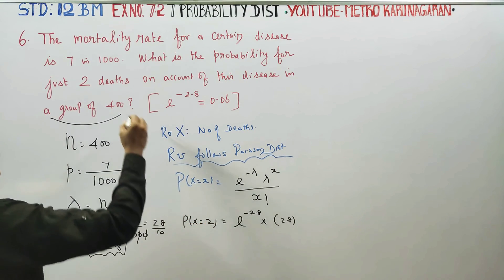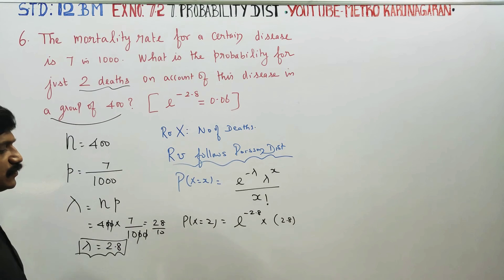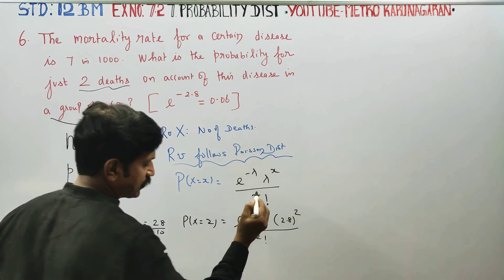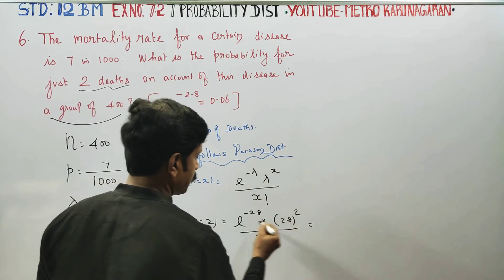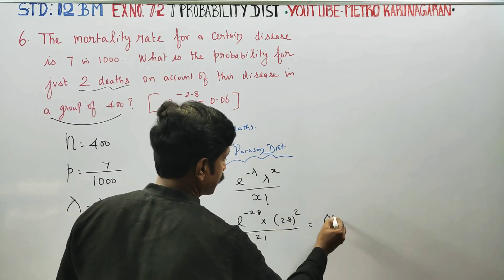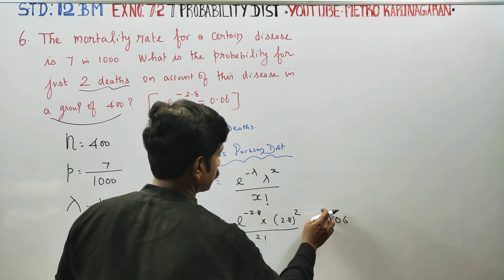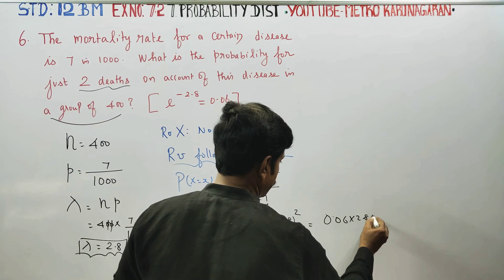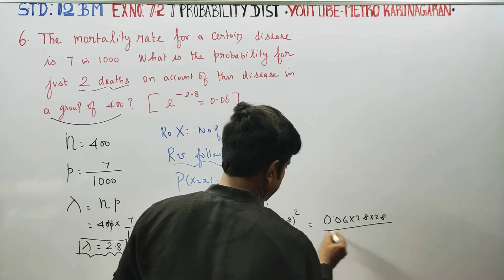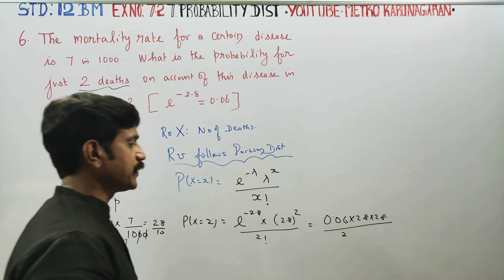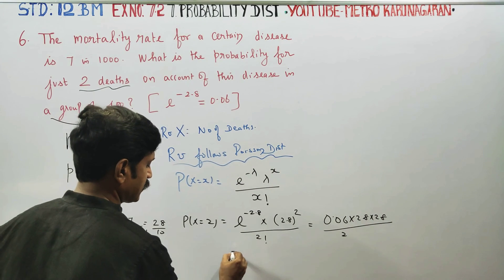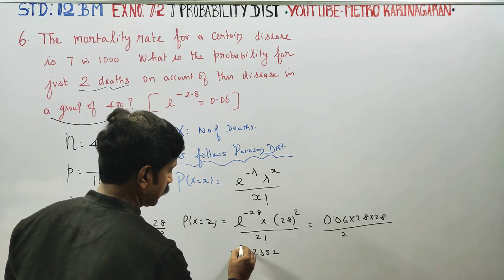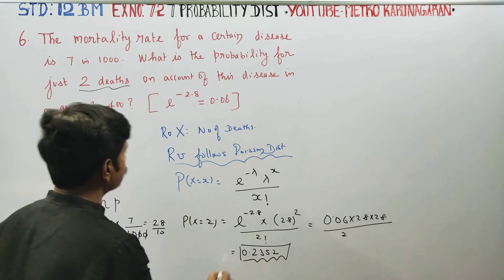We need the probability of X equal to 2 deaths. That gives e^(−2.8) times 2.8 to the power 2, divided by 2 factorial. The value of e^(−2.8) is approximately 0.06. Then 2.8 squared is 2.8 times 2.8, divided by 2. Calculating this gives the answer 0.2352.